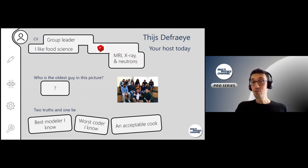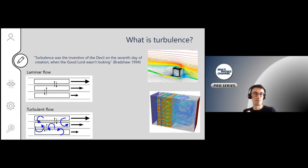Let's dive into the topic. What is turbulence? Somebody defined it as the invention of the devil on the seventh day of creation when the good Lord wasn't looking, because it's so complex. Laminar flows are quite easy—you have these very nice fluid parcels just moving along their way. With turbulent flow, you have a lot of mixing between different fluid layers, which creates very complex phenomena to model.